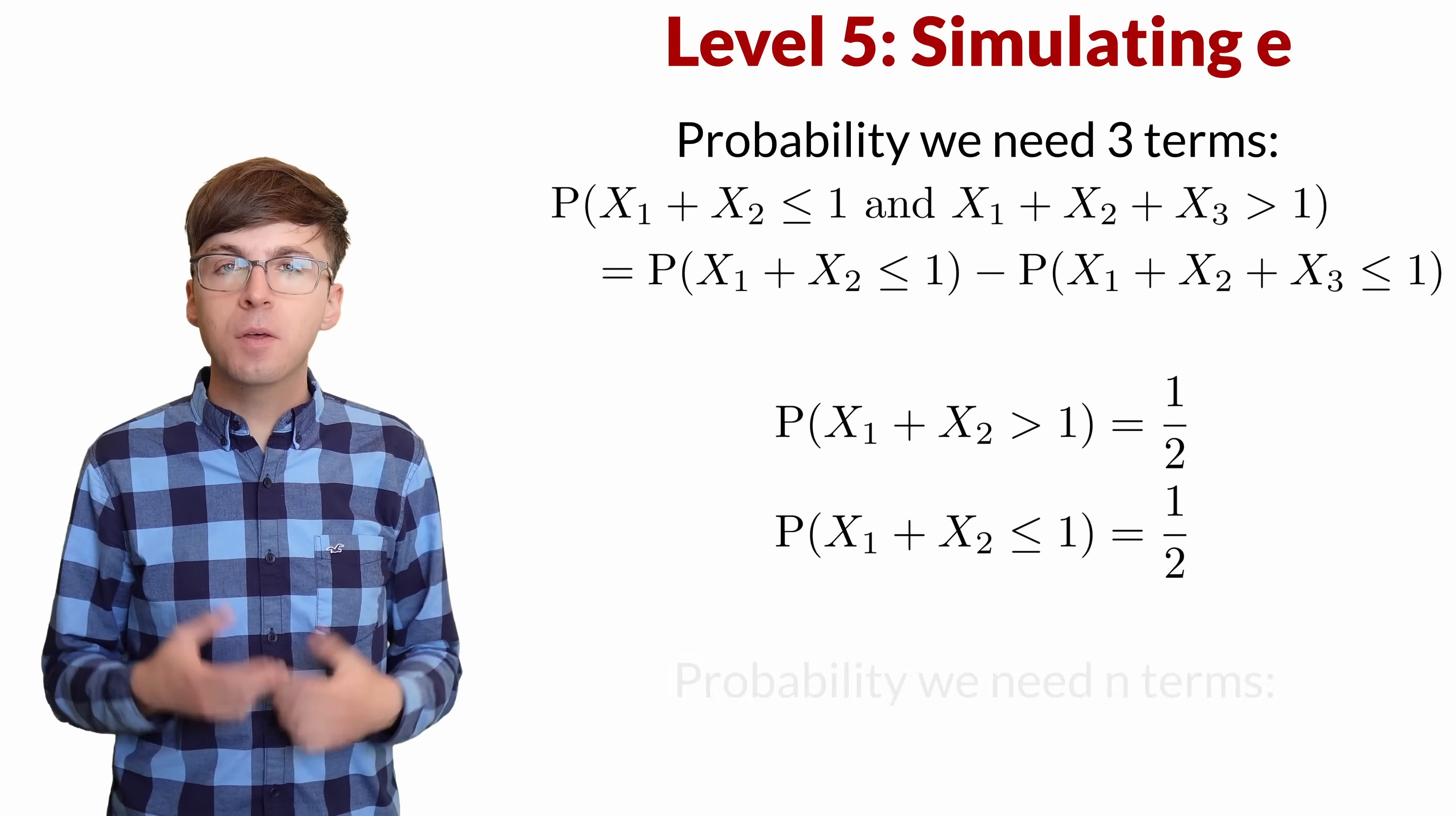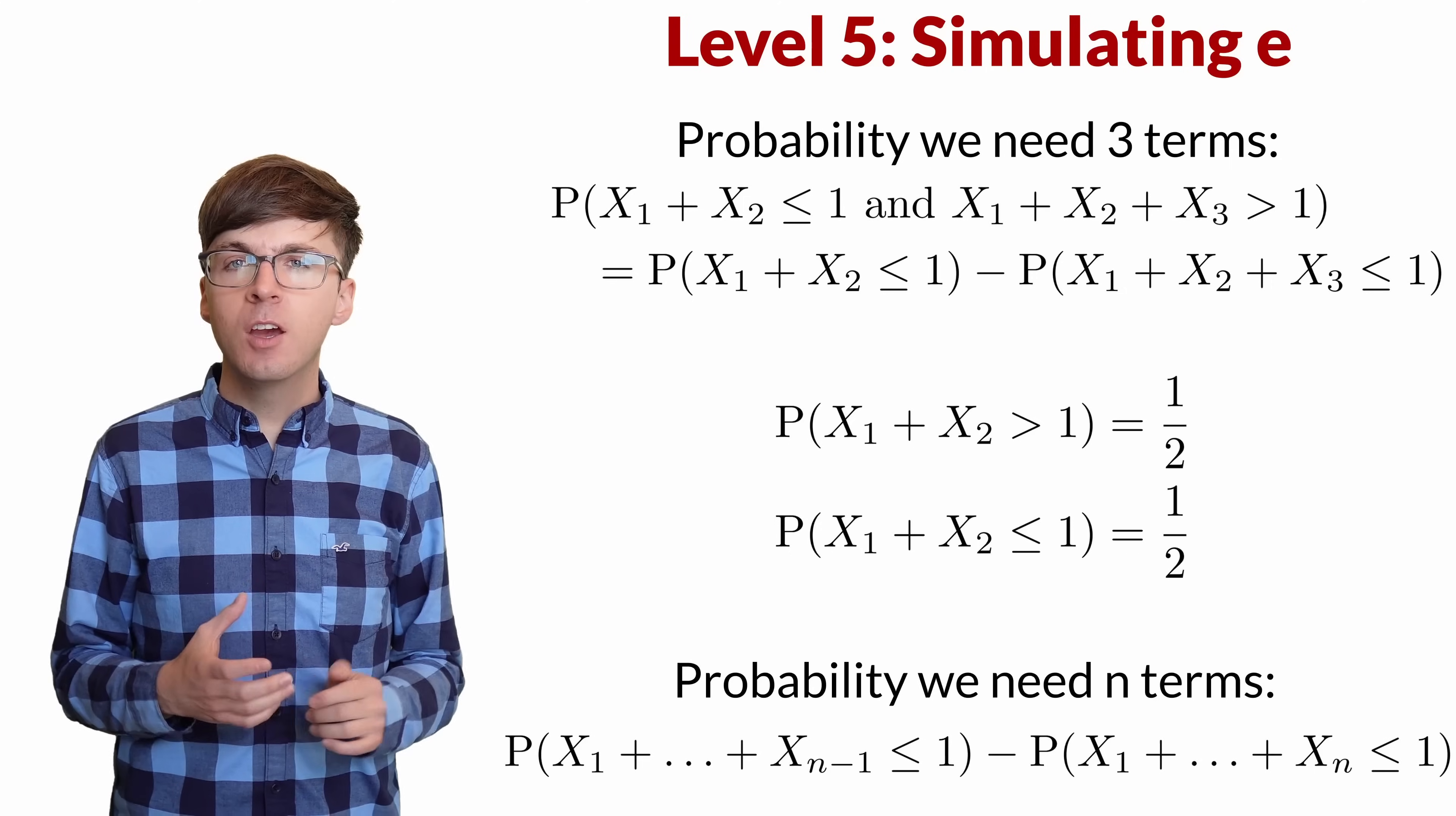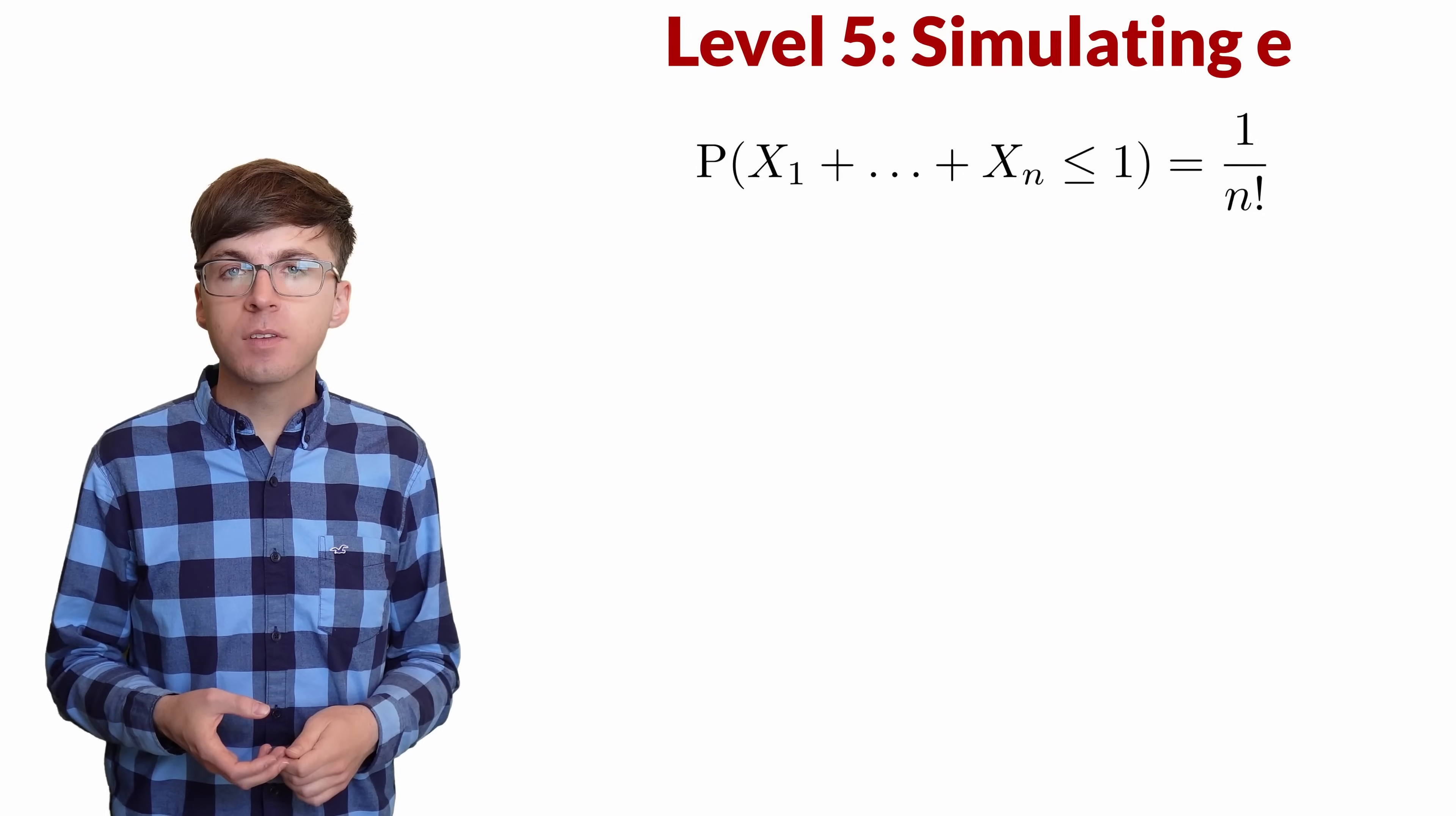To summarize this technique, the probability it takes n terms to get the sum above 1 is equal to the probability that the first n minus 1 terms add up to less than 1, minus the probability that the first n terms add up to less than 1. We just need to solve for the probabilities of this specific form, and then we'll know all the probabilities for this problem. It turns out that the probability the sum of the first n terms is at most 1 is 1 over n factorial.